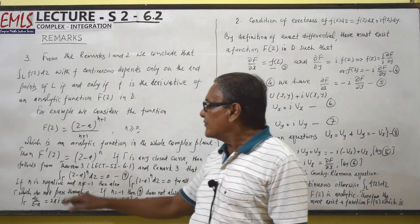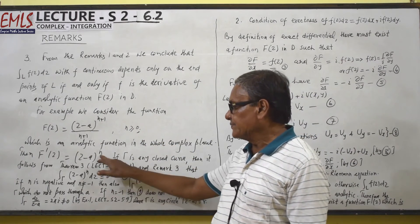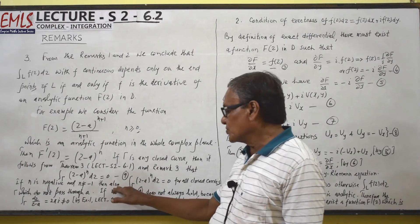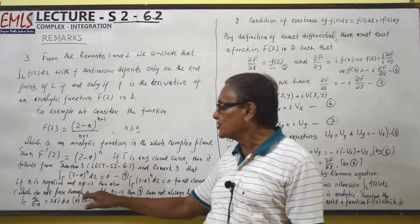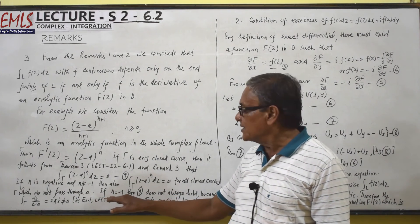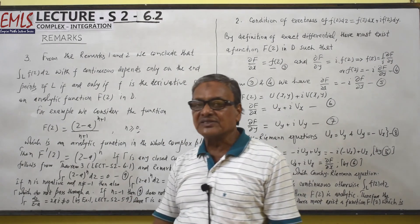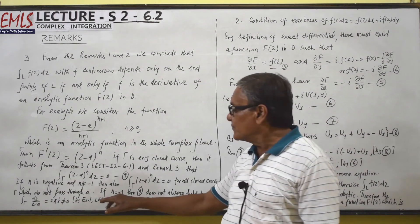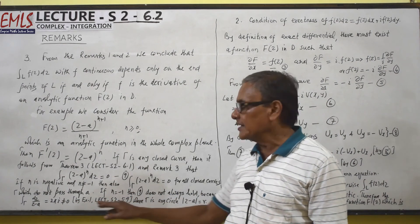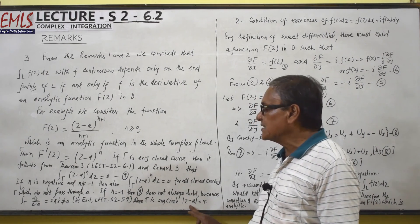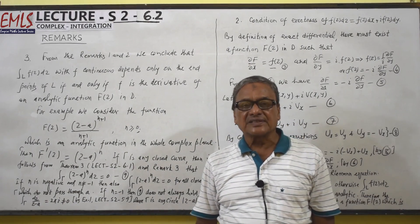So, integral over gamma of (z minus a)^n dz equals 0 (equation 9), for n greater than or equal to 0. If n is negative and n is not equal to minus 1, then also the integral over gamma of (z minus a)^n dz equals 0, for all closed curves gamma which do not pass through a. If n equals minus 1, this becomes the integral over gamma of dz divided by (z minus a). We have already proved in Example 1 of Lecture S25.9 that this integral equals 2πi, where gamma is the circle |z minus a| equals r. So these three remarks are very important and find application in further results.